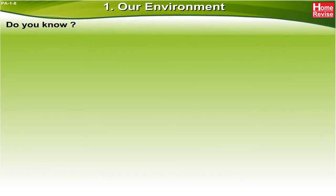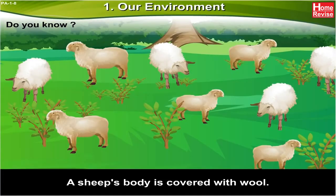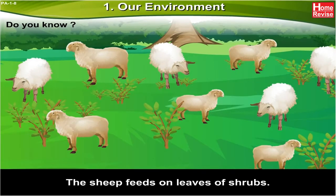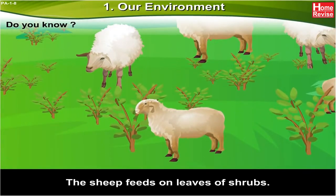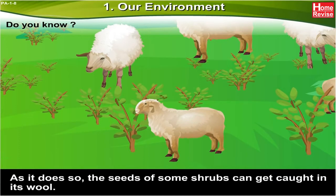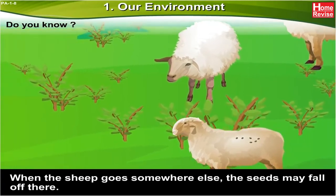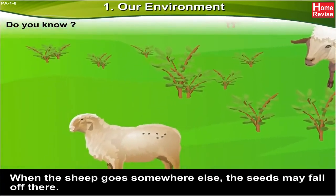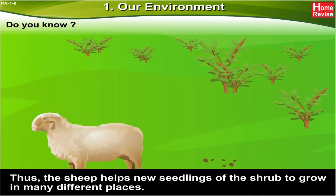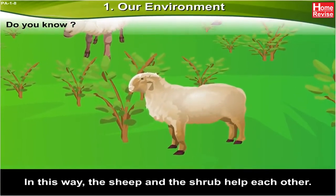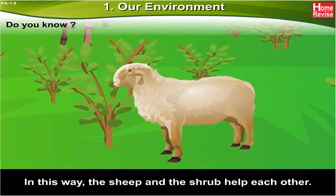Do you know? A sheep's body is covered with wool. The sheep can feed on leaves of shrubs. As it does so, the seeds of some shrubs can get caught in its wool. When the sheep goes somewhere else, the seeds may fall off there. Thus, the sheep helps new seedlings of the shrub to grow in many different places. In this way, the sheep and the shrub help each other. Interesting, right?